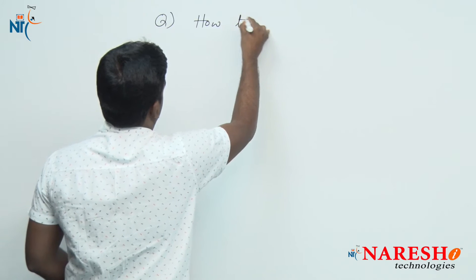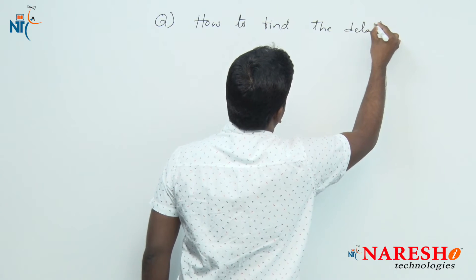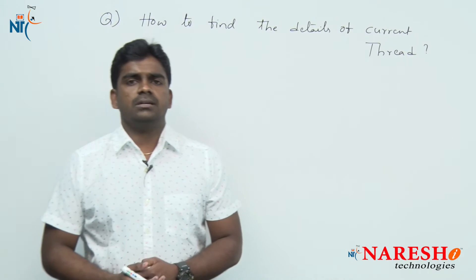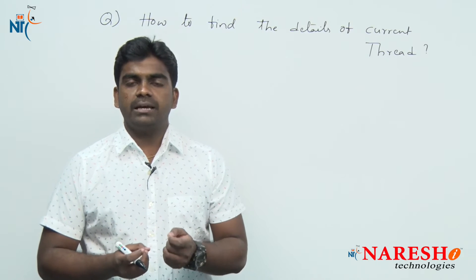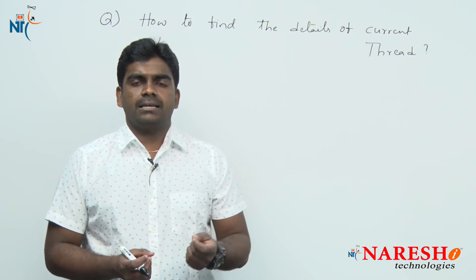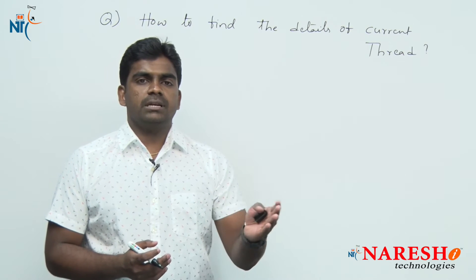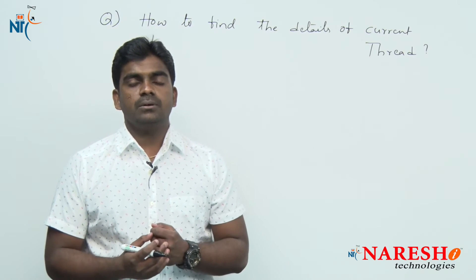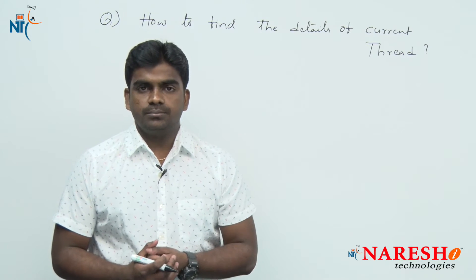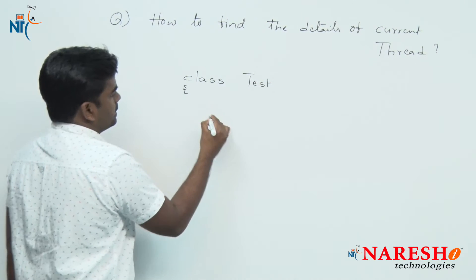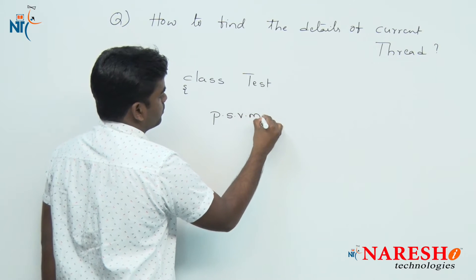How to find the current thread details. As a best example, suppose if I create a child thread, I can easily access getName() functionality as well as getPriority() functionality to find what is the name and what is the priority. But main is also a thread — in any class where we are writing the main method, here it is.